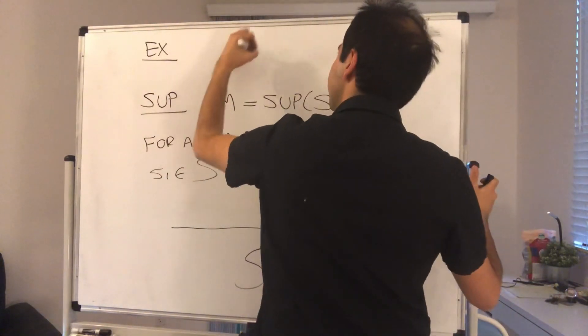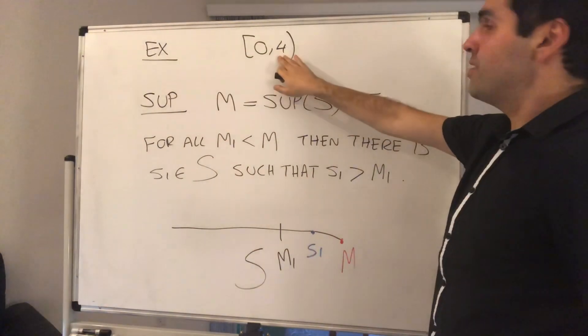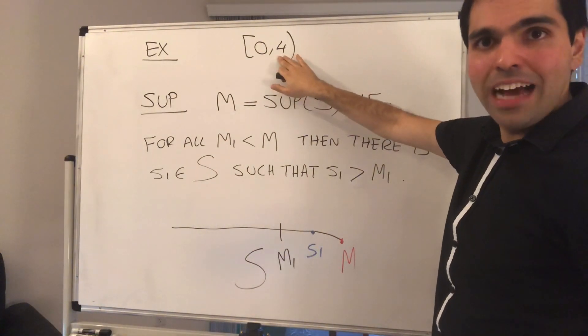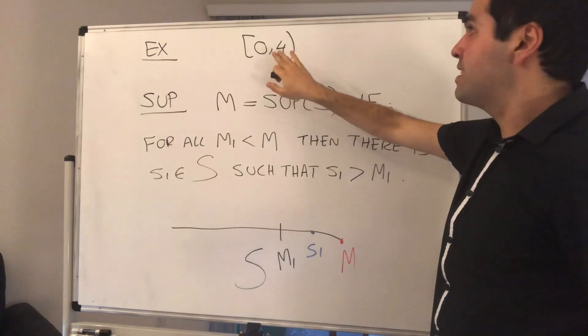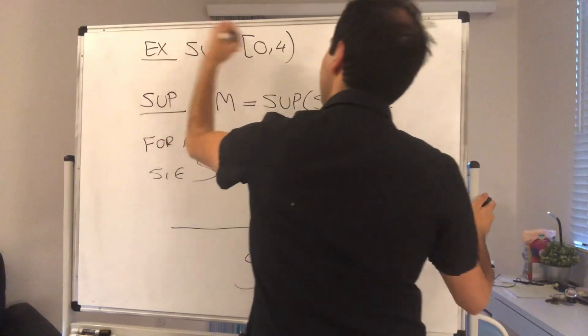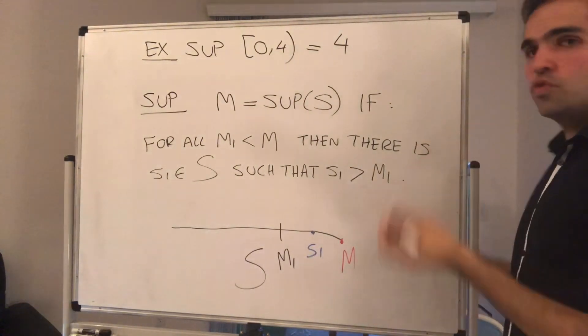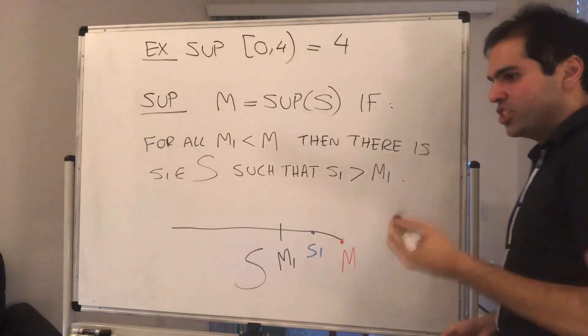For instance, consider the set (0,4). It does not have a maximum because the maximum would be 4, which is not in your set. However, it does have a supremum, which is 4. So that's why the supremum is a generalization of the maximum.